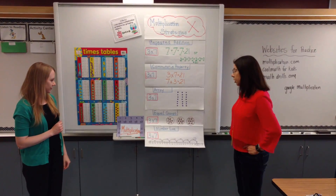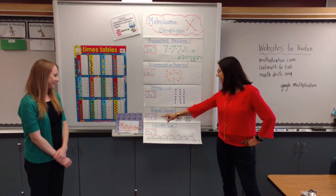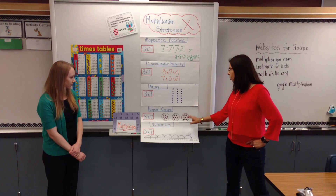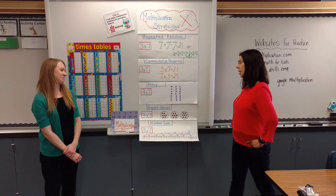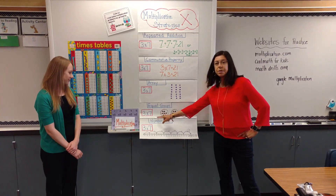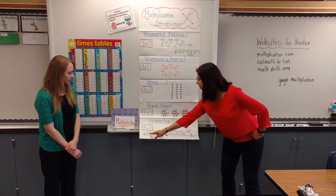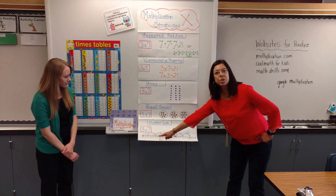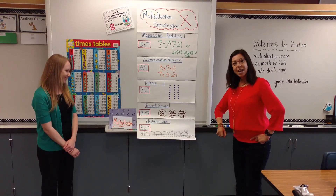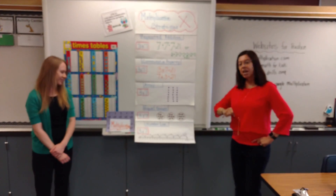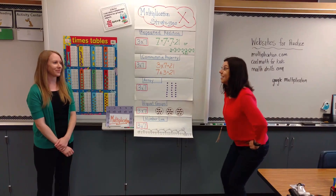We are also learning about equal groups — another strategy. 3 times 7: 3 groups with 7 in your group, and that makes 21. We also use a number line strategy: 3 times 1, 3 times 2, 3 times 3, 3 times 4, 3 times 5, 3 times 6, and 3 times 7, which makes 21.